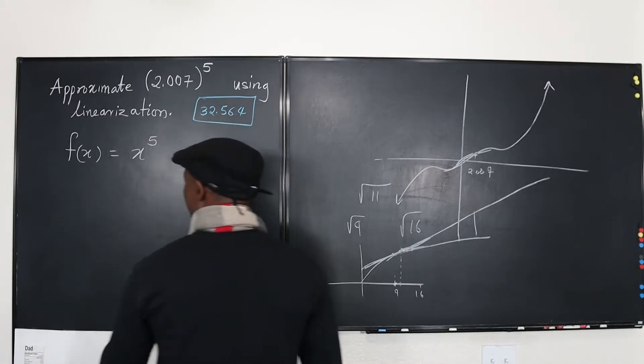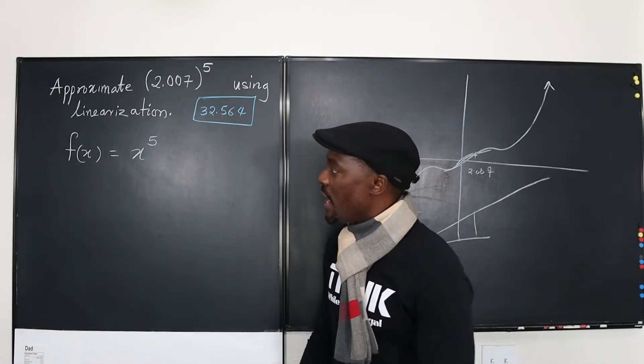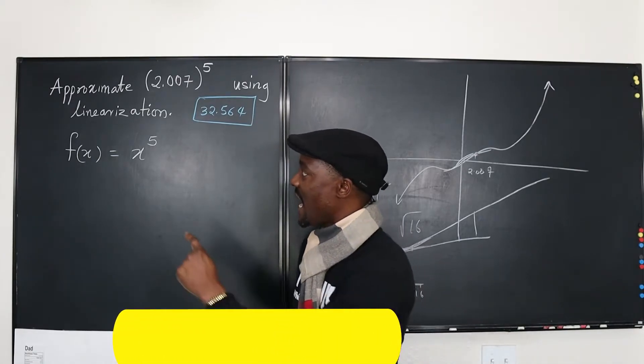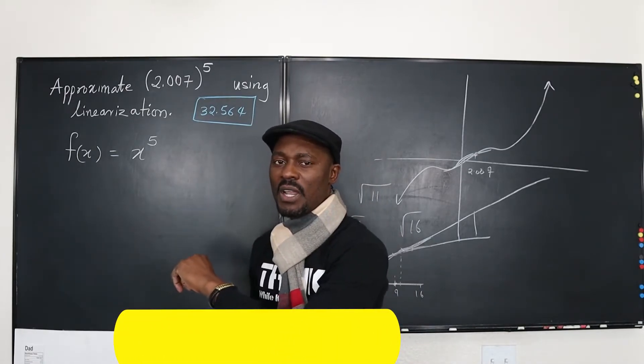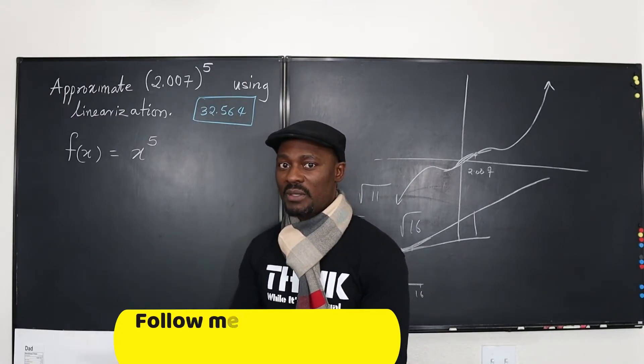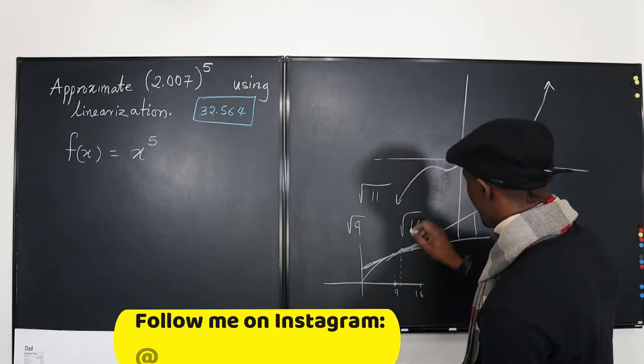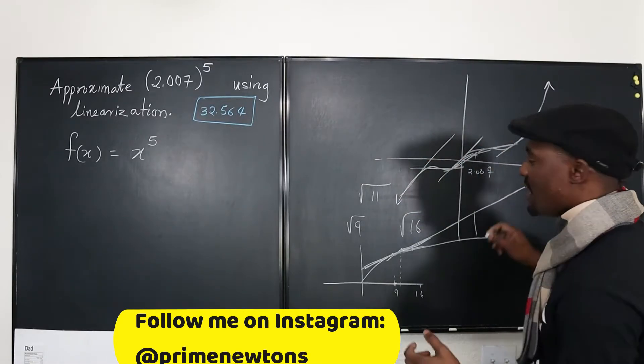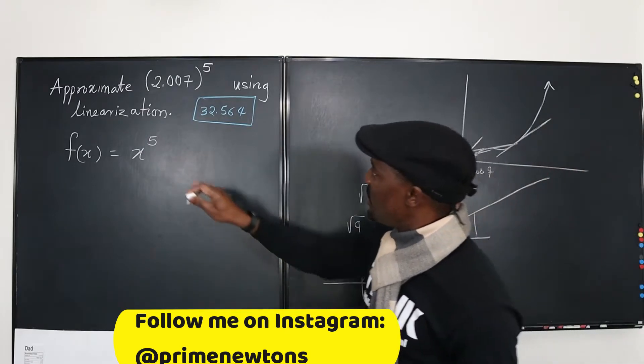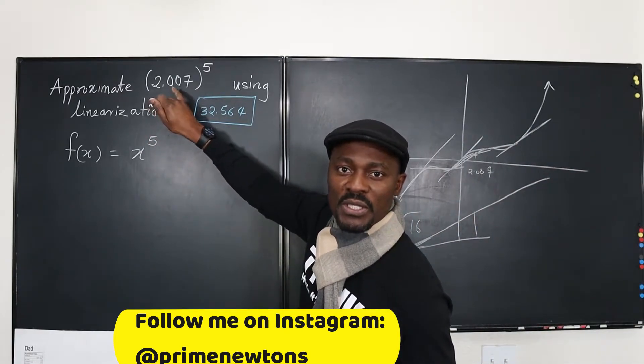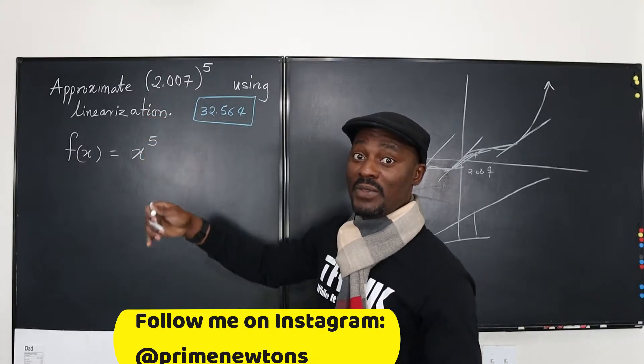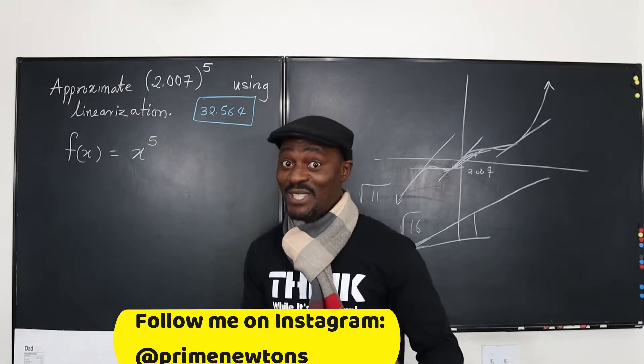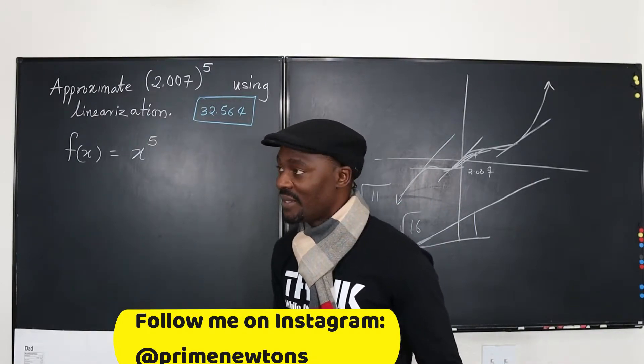So now this is what you have. Let's say you are given this function and somebody says, find the equation of the tangent line to this function. You're going to ask a question at what point you need a point. Because there's so many tangent lines that can be generated here, here, here, so many tangents. Our point of interest is the point that is closest to 2.007. Obviously the closest reasonable number that is easy for you to do the calculation with is 2.